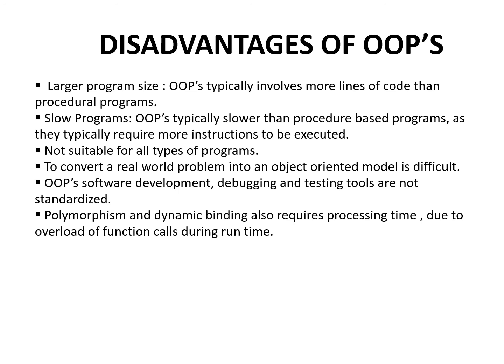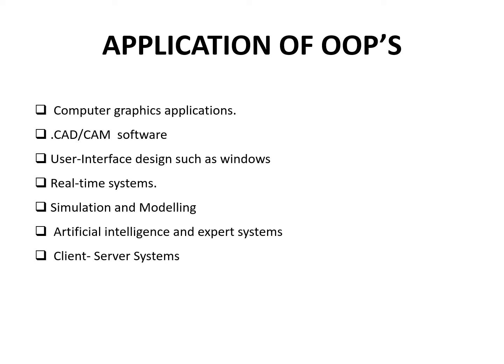Polymorphism and dynamic binding also require additional processing time due to overloading of function run times. The applications of OOPS include computer graphics applications, CAD and CAM software, user interface design such as Windows, real-time systems, simulations and modeling, artificial intelligence, expert systems, and client-server systems.